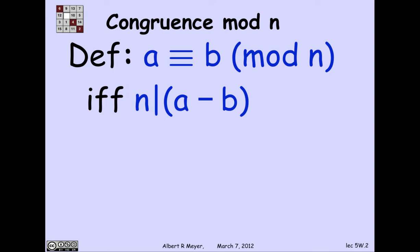All of these, as usual, are integers. And the definition is simply that a is congruent to b mod n if n divides a minus b, or a minus b is a multiple of n.